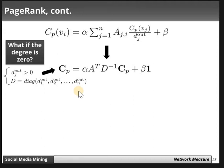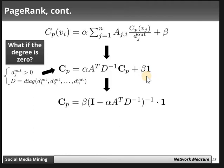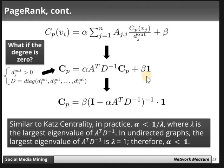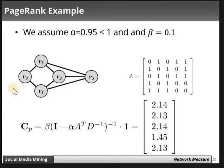In matrix form, PageRank centrality is: c_PR = alpha * A * D^{-1} * c_PR + beta * 1, where D is a diagonal matrix of out-degrees. In practice, alpha is less than or equal to 1/lambda. For the largest eigenvalue of A * D^{-1}, lambda equals 1, so alpha is less than 1. We assume a 5-vertex example where alpha is 0.85 and beta is 0.1, with the given adjacency matrix.